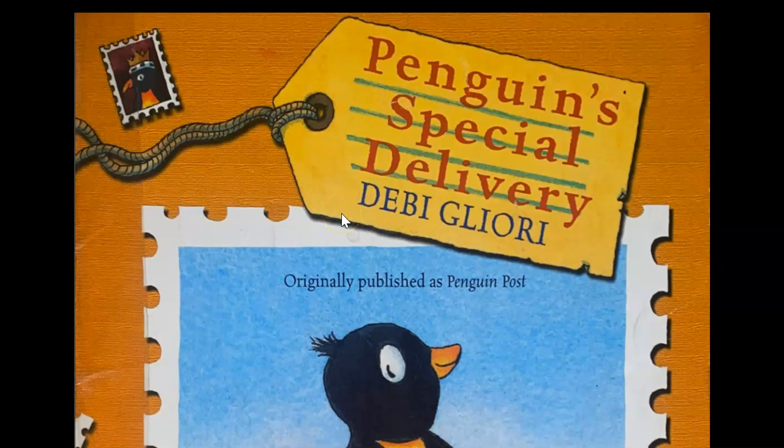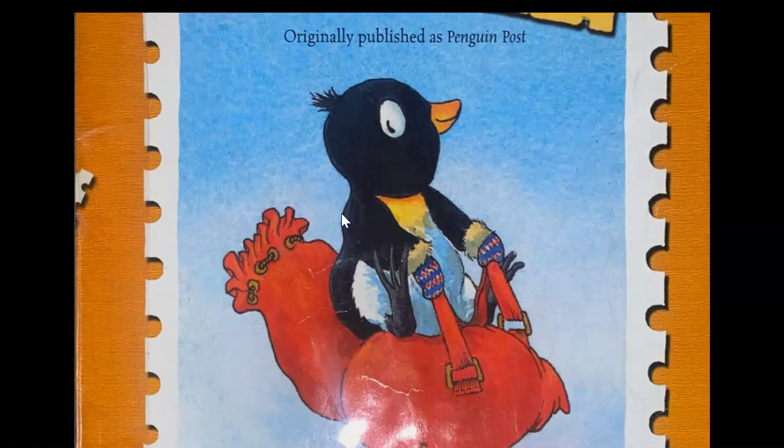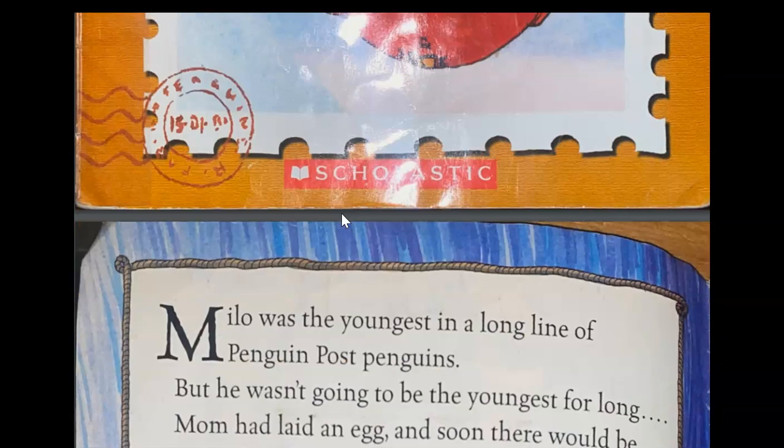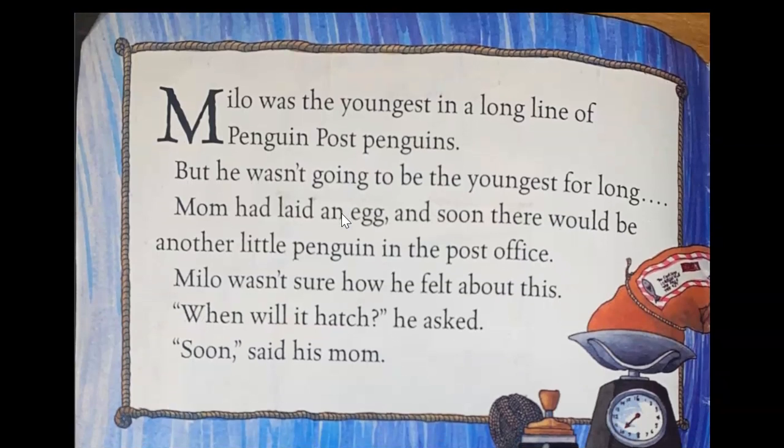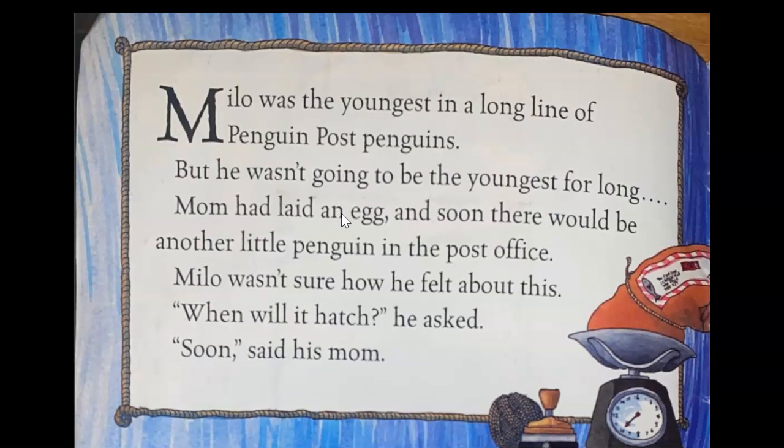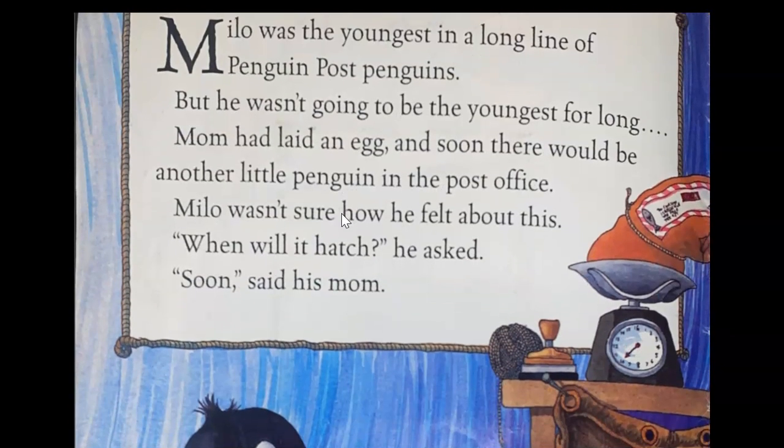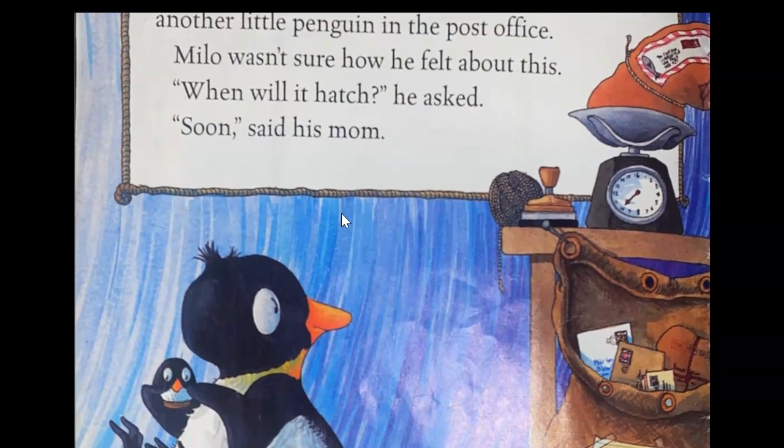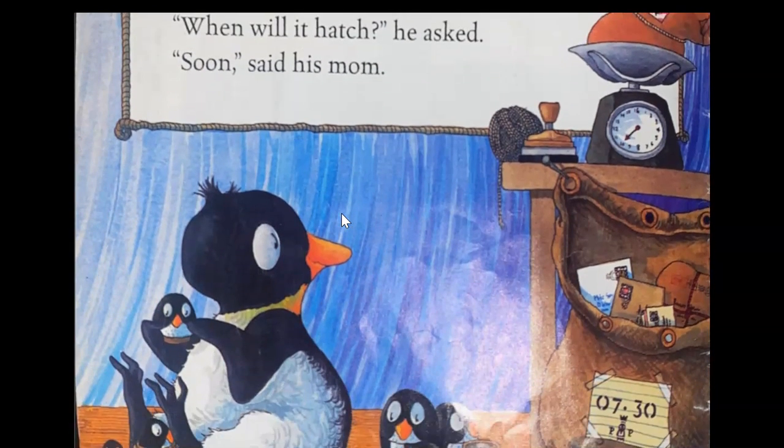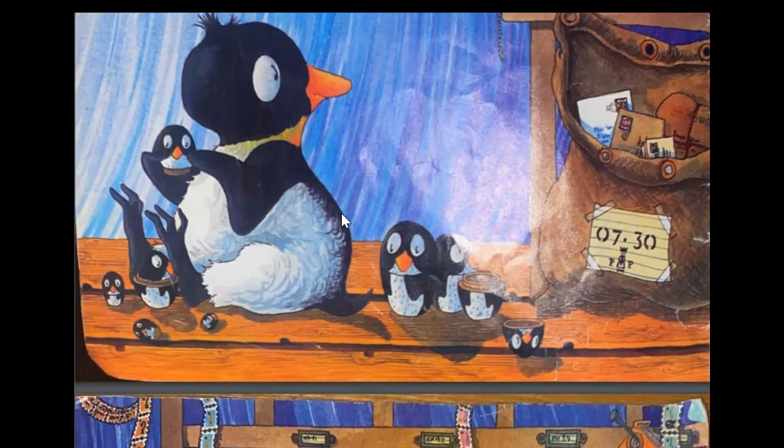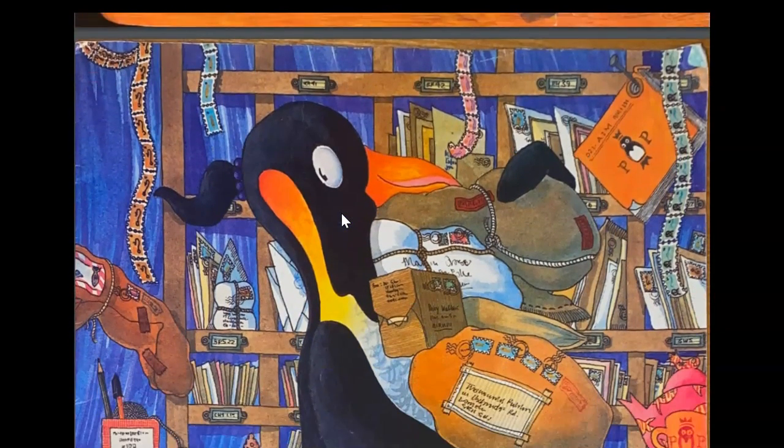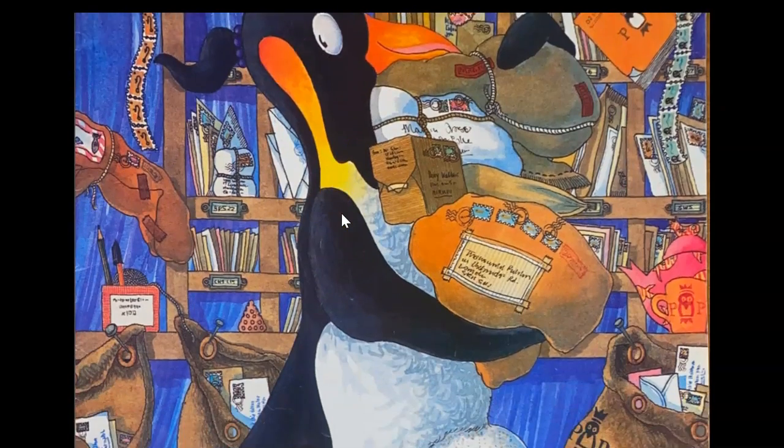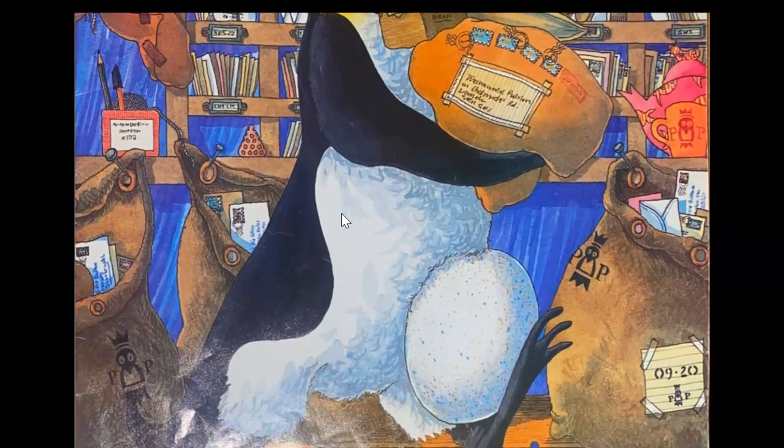This book is called Penguin Special Delivery. Milo was the youngest in a long line of penguin post penguins, but he wasn't going to be the youngest for long. Mom had laid an egg and soon there would be another little penguin in the post office. Milo wasn't sure how he felt about this. When will it hatch, he asked. Soon, said his mom. There's the egg.